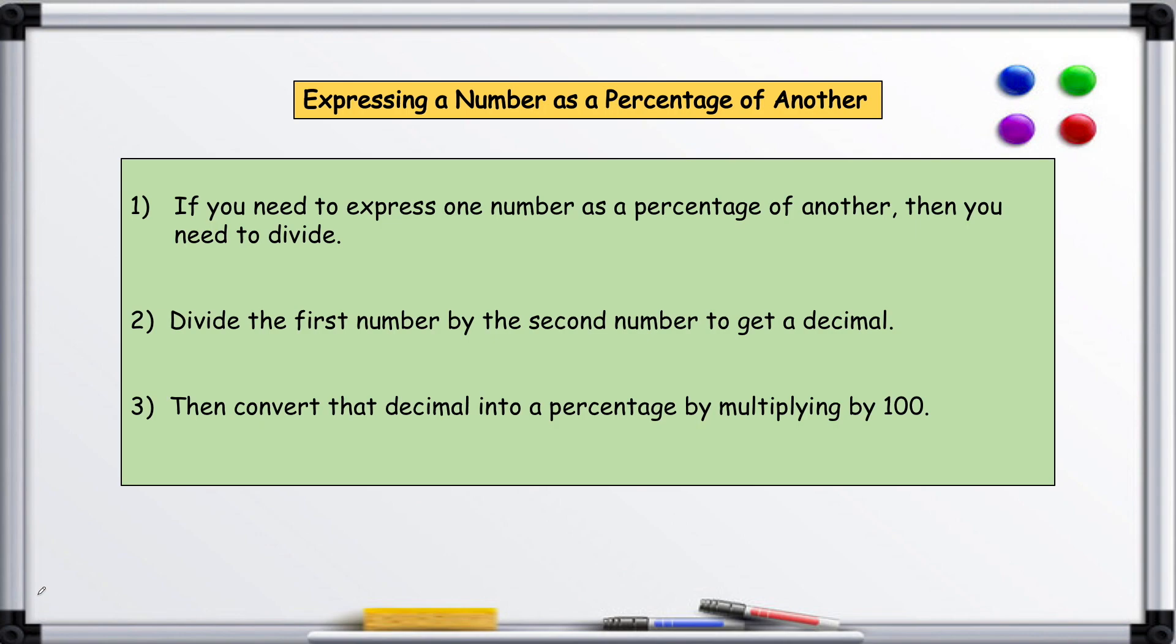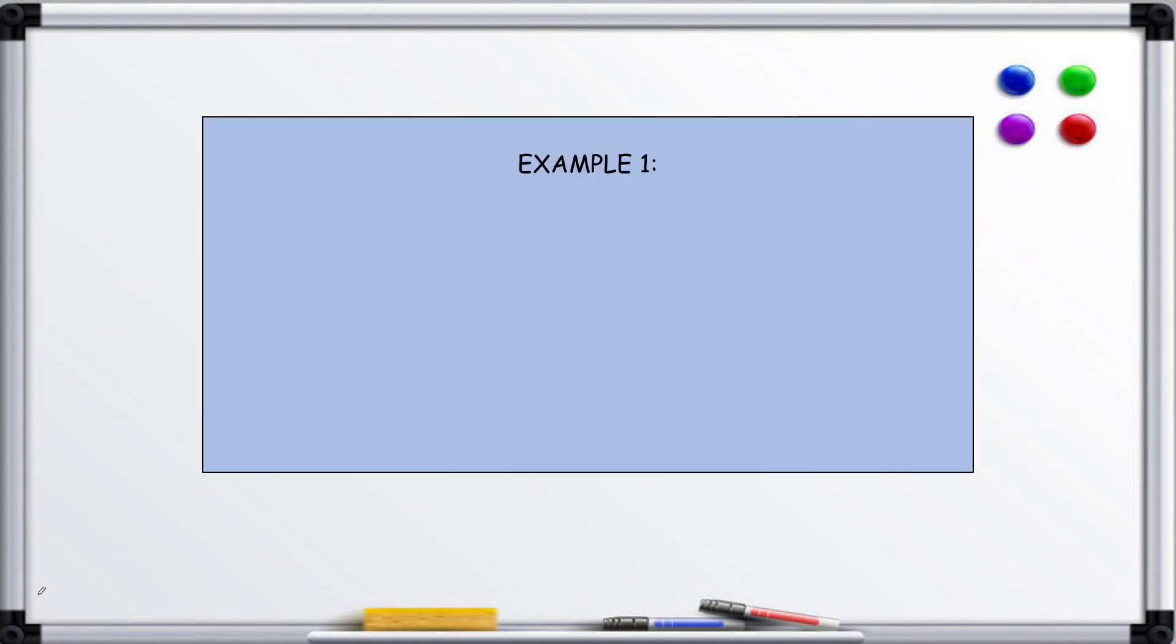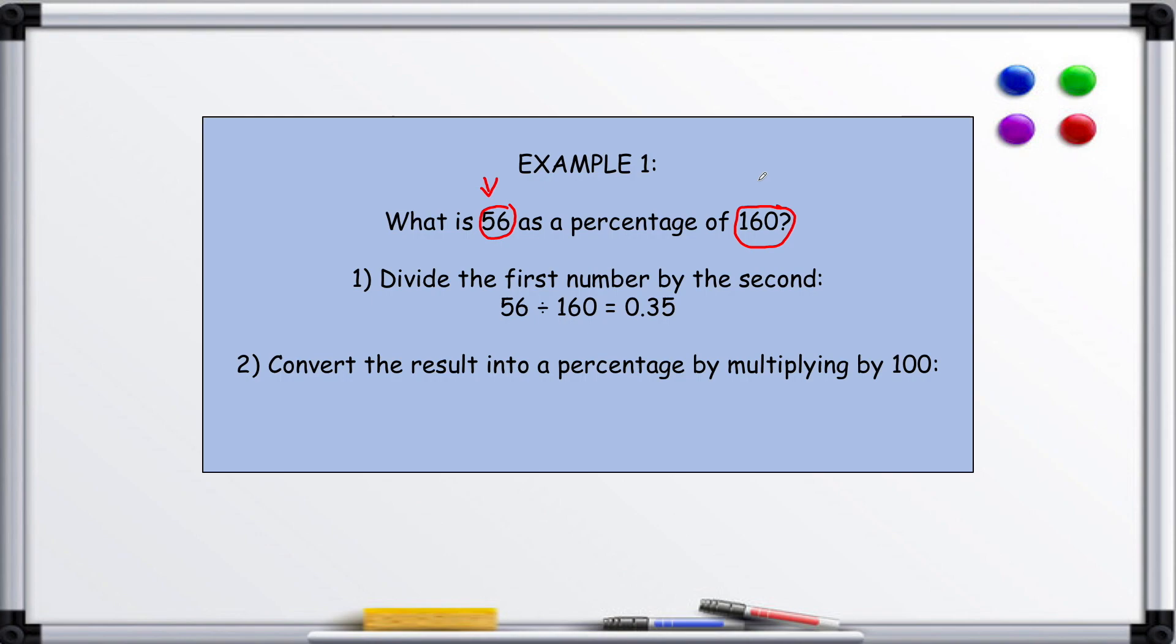Here's an example: What is 56 as a percentage of 160? Now remember, we divide this number here by this number here, so that's 56 divided by 160, and that should give you a decimal. If you don't get a decimal, then you've done it the wrong way around.